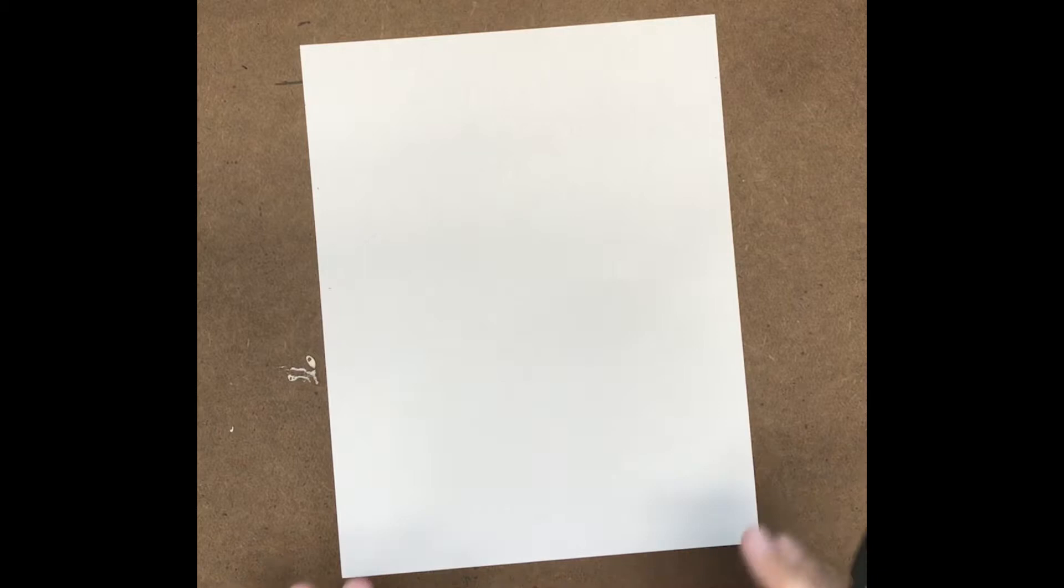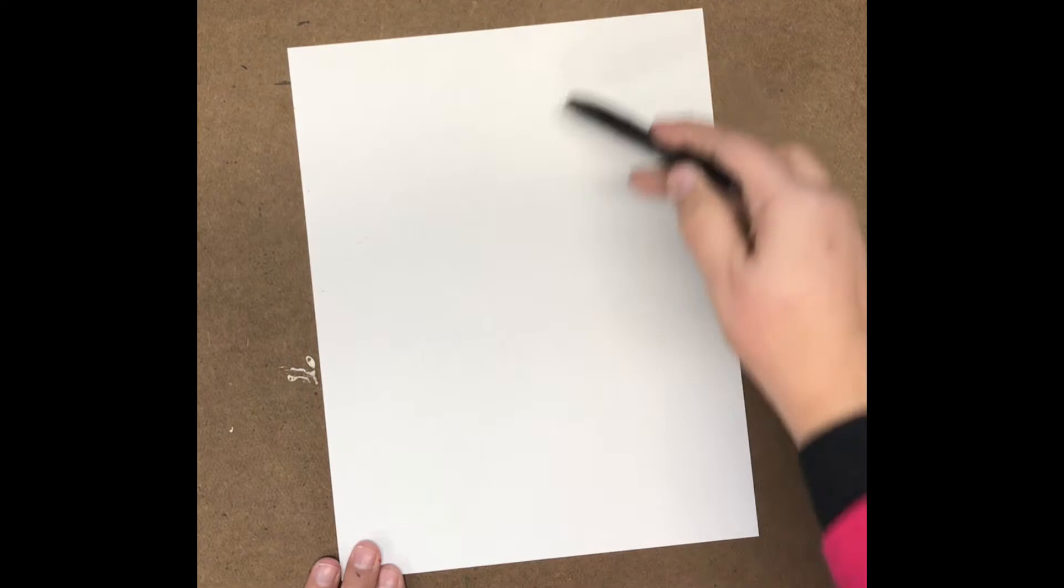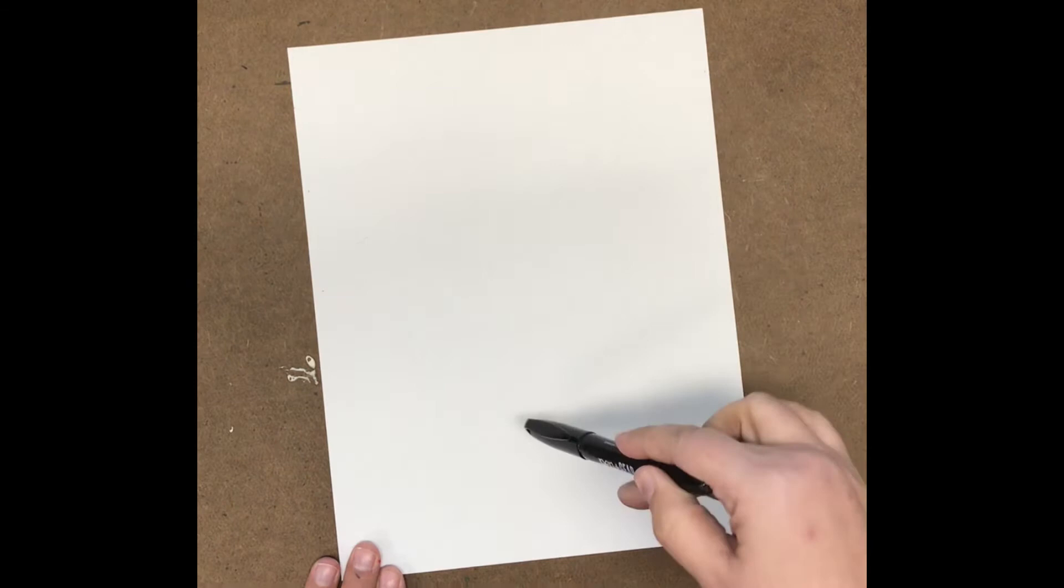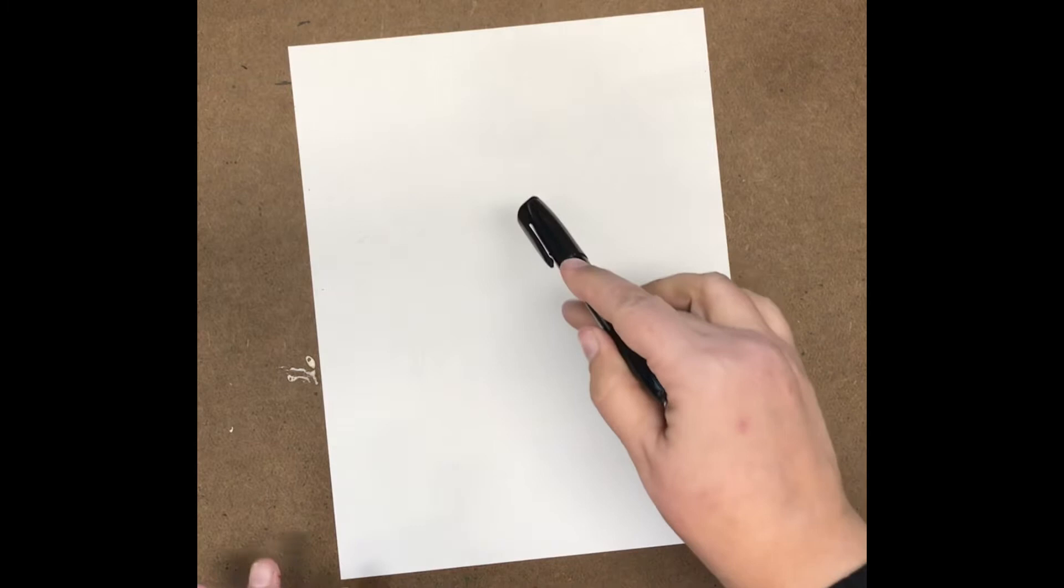Put one of your pieces of paper off to the side because you won't need it right away. And then on this piece of paper we're going to be making four, maybe five vertical lines. Those are the up and down lines and let's make them a little bit wavy or zigzaggy but don't make them too tricky because we're going to be cutting these out later.